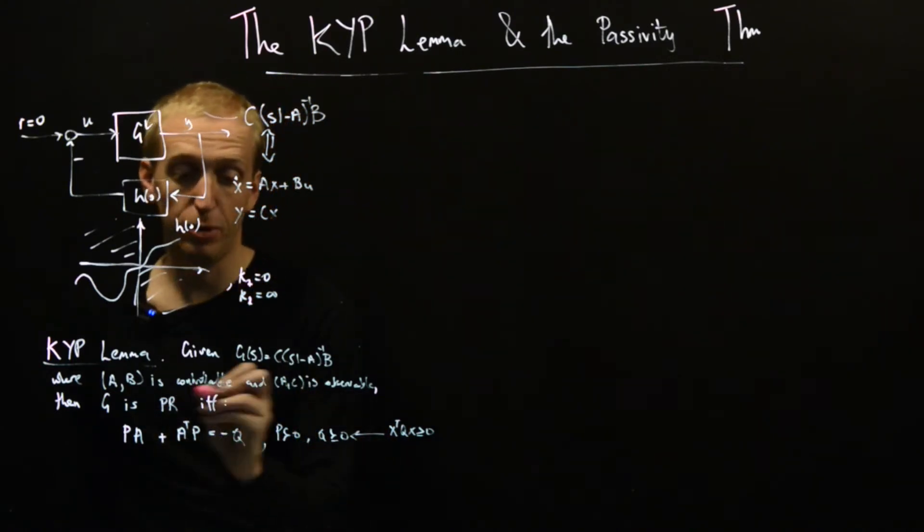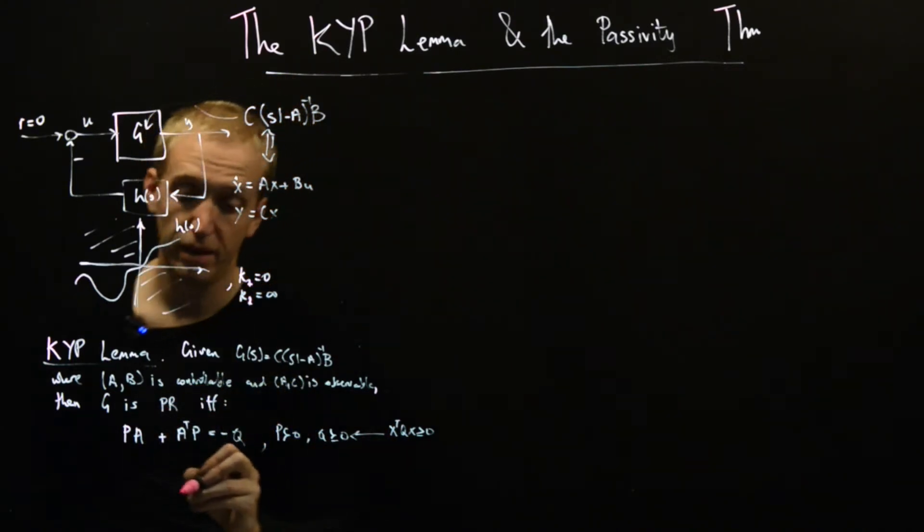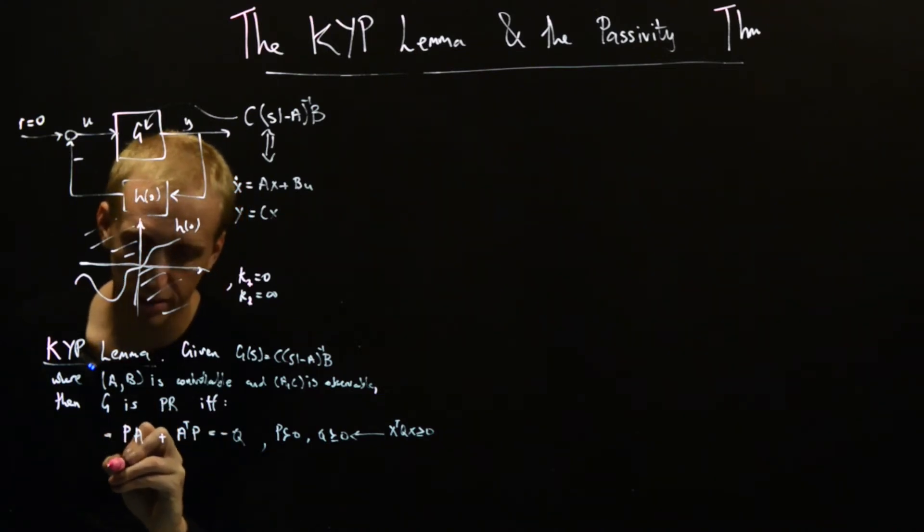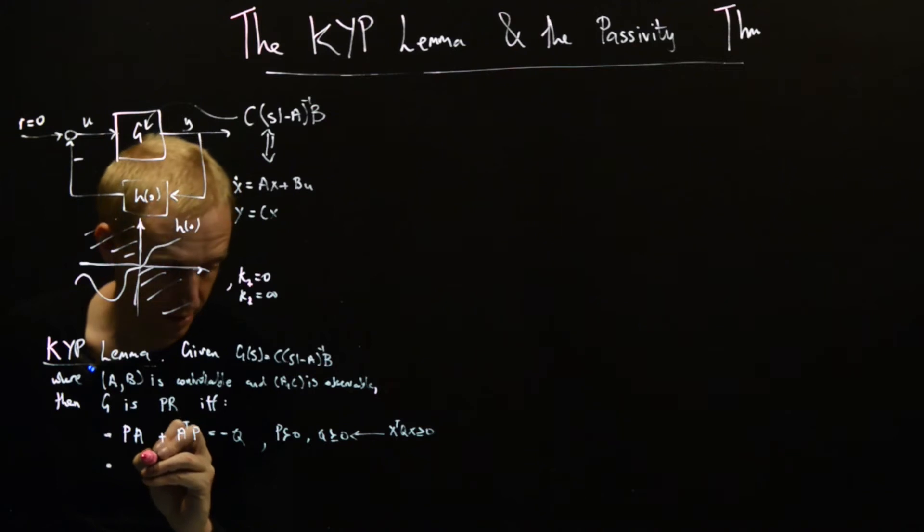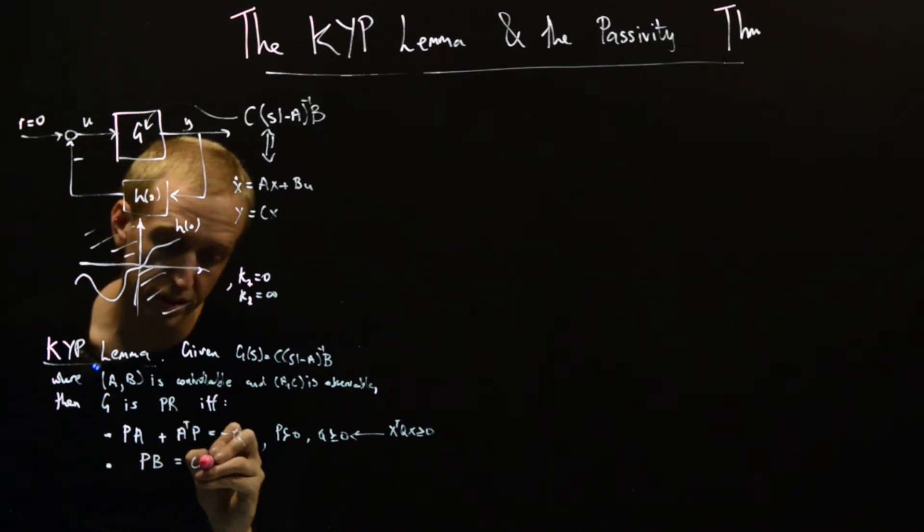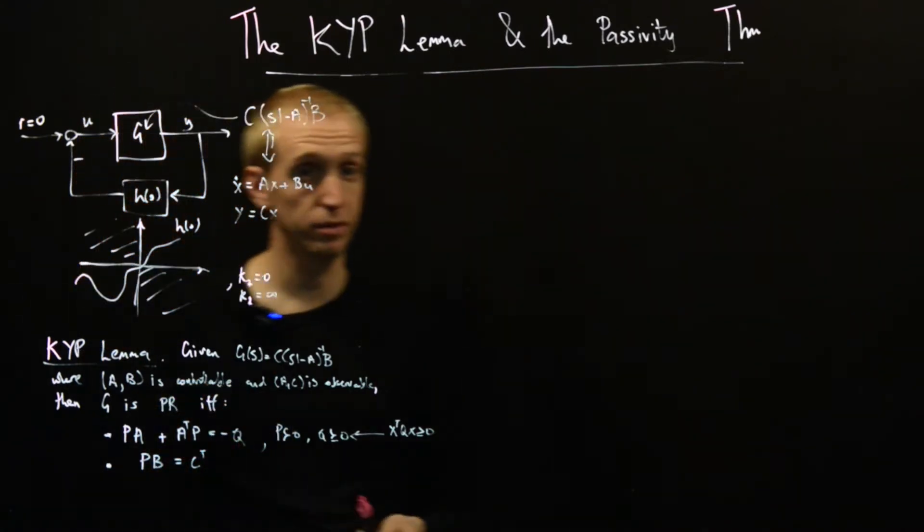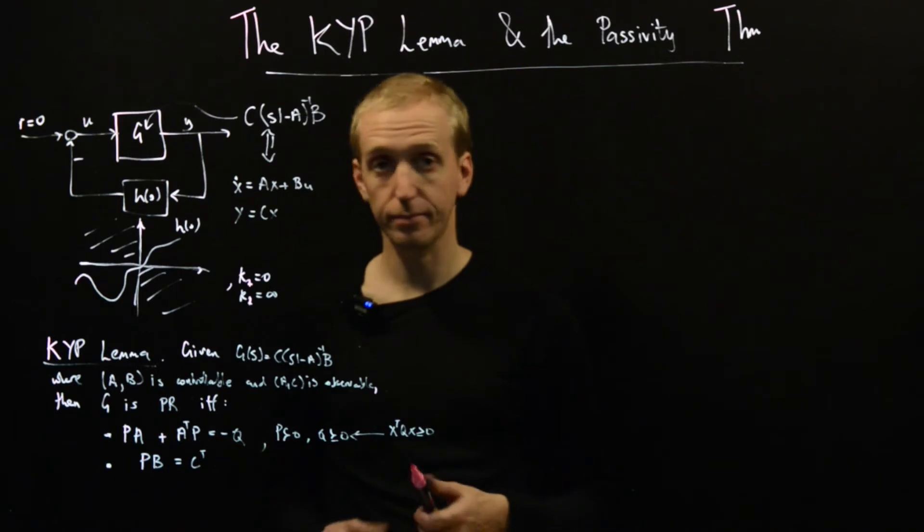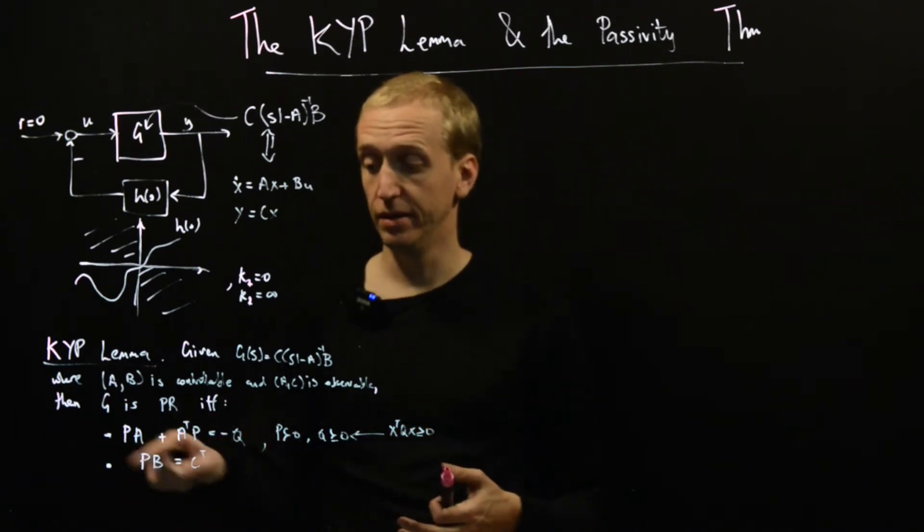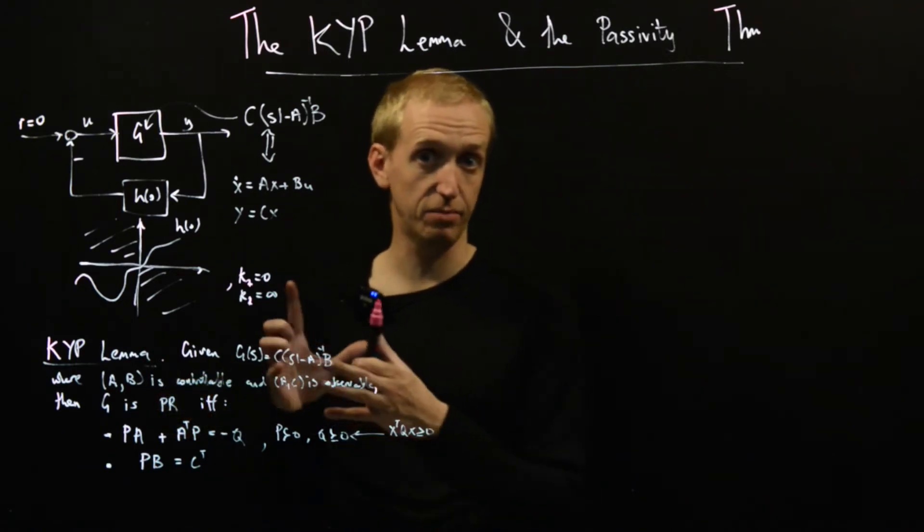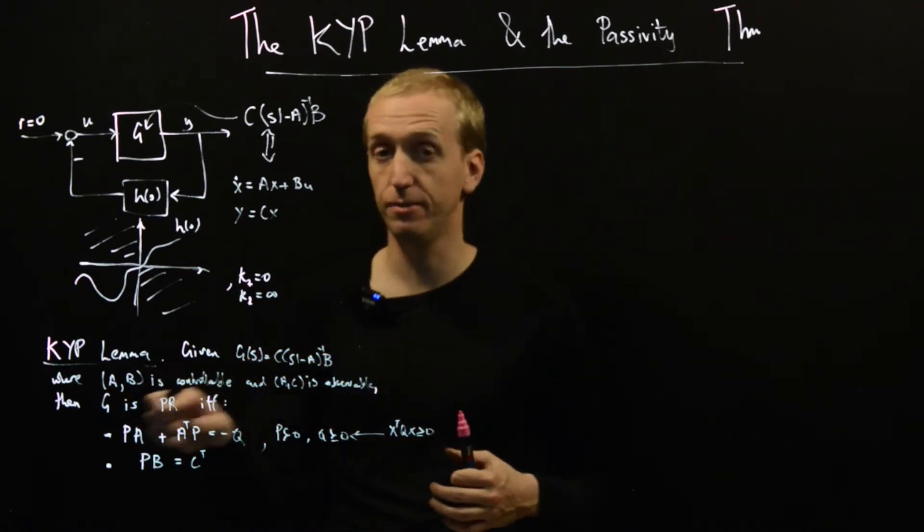G is positive real if this holds, and condition two is that P B equals C transpose. So it's like a very special type of solution to a Lyapunov equation.